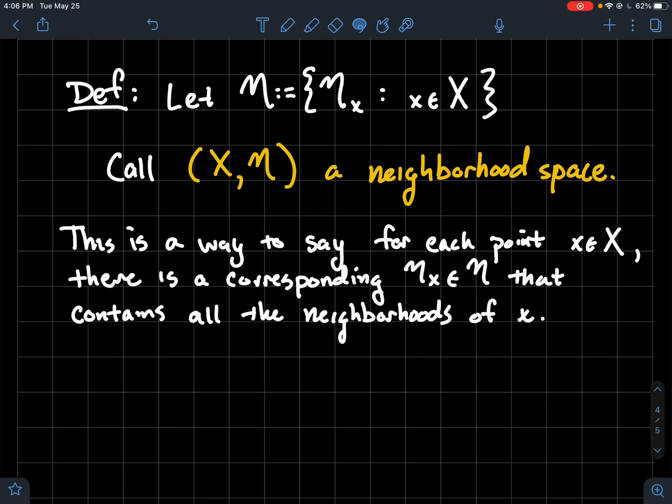So what is this though? This is a way to say that for each point in the space there's a corresponding complete system that contains all the neighborhoods of x. So if you've got a point, I can also tell you about all the neighborhoods of x simultaneously. So all this is is just kind of a way to capture that information.